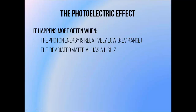A photon is most likely to undergo the photoelectric effect when its energy is relatively low, but still higher than the binding energy of the electron it strikes, because if the energy is lower than this, it can't free the electron from its orbital and the photoelectric effect can't take place. So it's most likely when the photon energy is within the order of kiloelectron volts. It's also more likely when the photon is traveling through a material with a high atomic number.